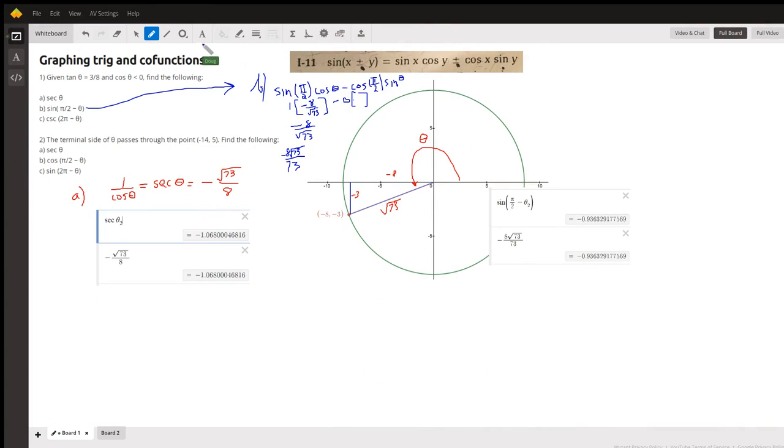Okay, you are asked in this problem, first of all you're given that the tangent of some angle theta is three eighths, but you're also told that the cosine of theta is negative. So the tangent of an angle can be positive in either the first or the third quadrants, but the cosine is negative in the second and third.